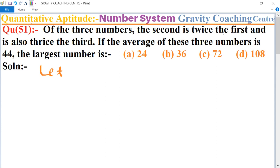The second number is twice the first and is also thrice the third. So first we let the second number. Let the second number be 6x. So the first number equals...